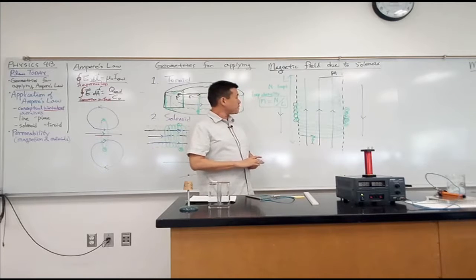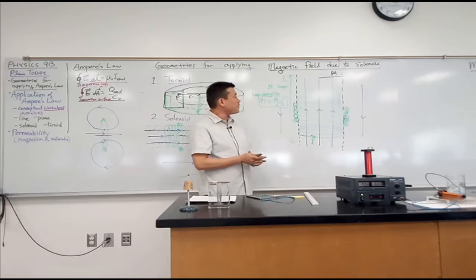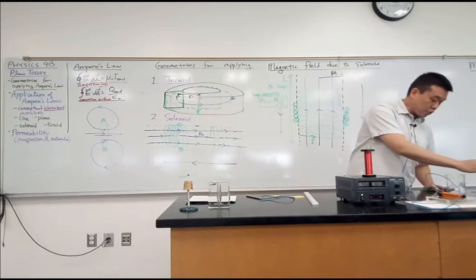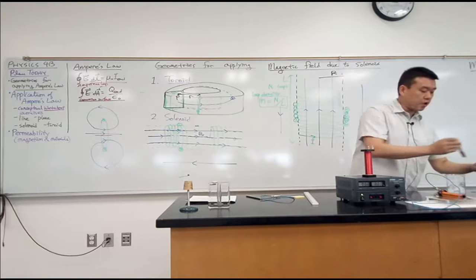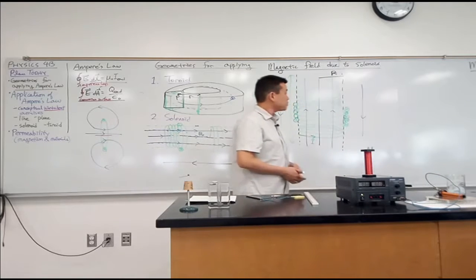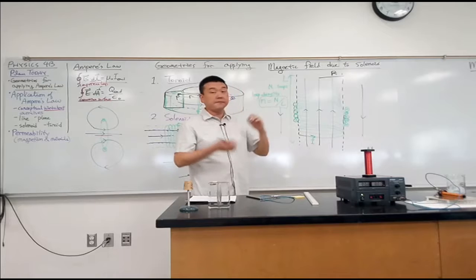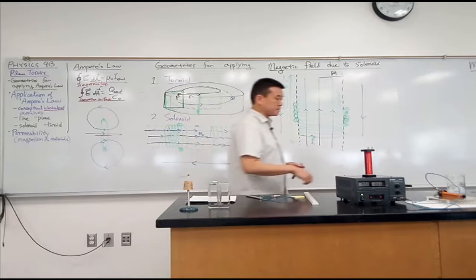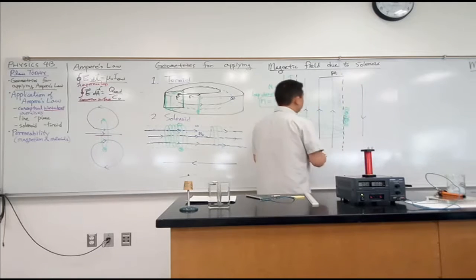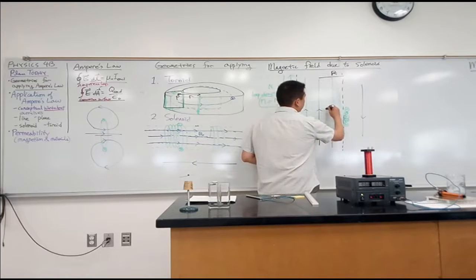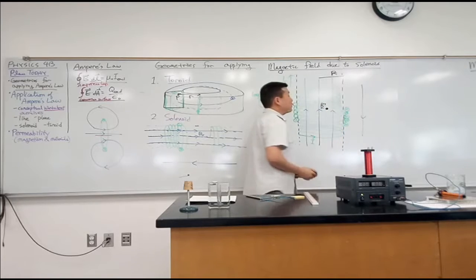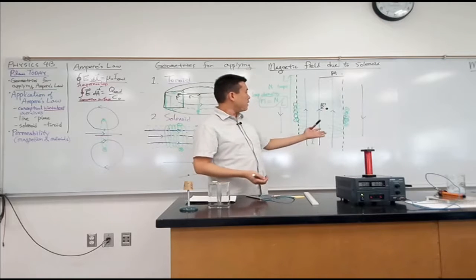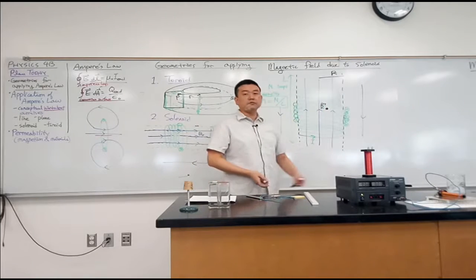So what's necessary here is choice of the loop, how you would choose a loop, an Amperian loop, so that will allow you to calculate the magnetic field. So let me just say, all right, I want to know the magnetic field at this point. What is magnetic field here? That's my question. How would you pick the loop? Let's start out with a loop that's going through this point. What would that look like?